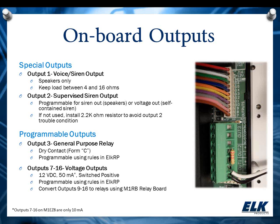What we're really going to spend time talking about today is programmable outputs. On the main board, we have Output 3, which is a Dry Contact Form C relay, and you can program that through rules. We also have voltage outputs on the J16 connector, which are outputs 7 through 16 — 12 volts DC, 50 milliamps. They're not real high current, but you can use them for driving LEDs or triggering relays. They are switched positive outputs, so your lead is your positive, and there's a negative on that harness to make connections easier.